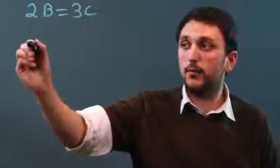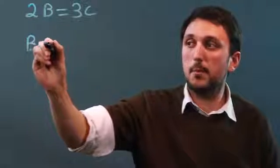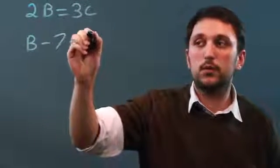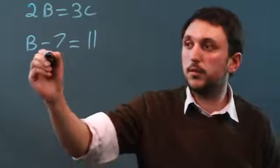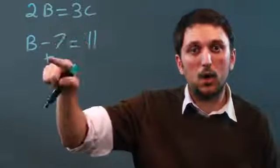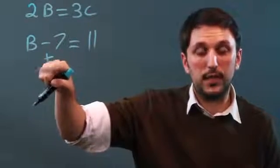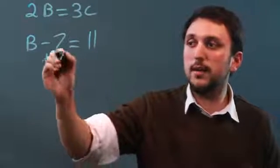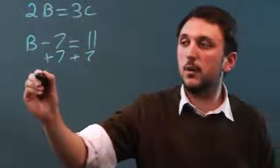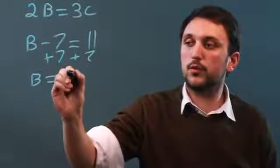However, if we have B minus 7 equals 11, then we simply put all the numbers on one side, keep all the letters on the other side, and we have a solution. So we add 7 to each side, and we have B equals 18.